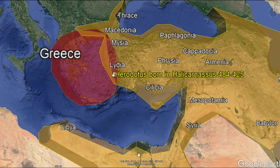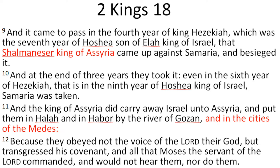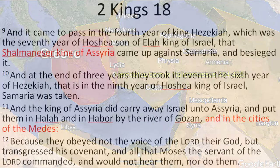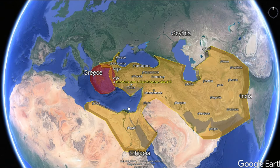We can go to 2 Kings 18. It says, 'And it came to pass in the fourth year of King Hezekiah, which was the seventh year of Hoshea son of Elah, king of Israel, that Shalmaneser, king of Assyria, came up against Samaria and besieged it.' You can always pause the video and read things I put on screen. This ends up being an interesting time. I'm going to zoom out here so we can get a different perspective.